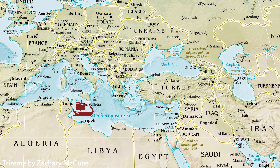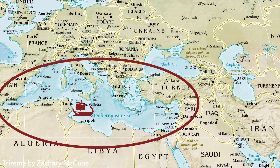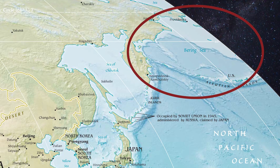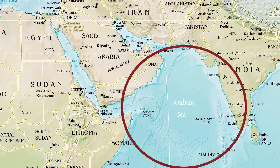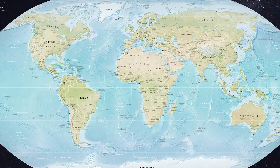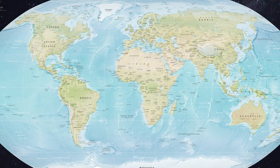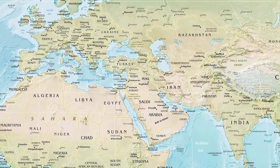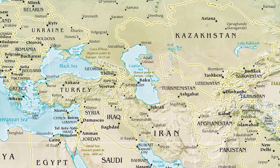A few seas would be the Mediterranean, Bering, Norwegian, Arabian, and so on. You'll notice that these are often just bits of the ocean that are mostly surrounded by land that we've named. The Caspian Sea is sometimes classified as a salt lake, although it's quite large.